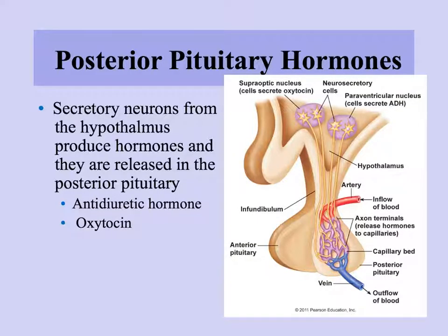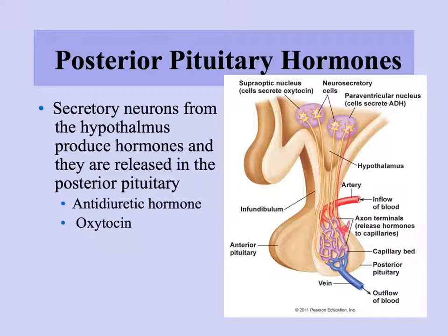The posterior pituitary has an entirely different mechanism. Nerves from the hypothalamus go all the way down to the posterior pituitary and directly connect with the blood system there. There are no secretory cells in the posterior pituitary — the nerve cells secreting the hormones are in the hypothalamus. The two hormones produced via the posterior pituitary are antidiuretic hormone (ADH) and oxytocin.